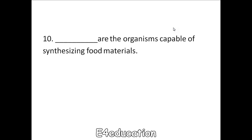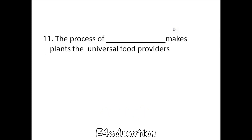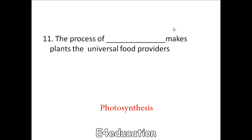Which are the organisms capable of synthesizing food material? Autotrophs. The process of photosynthesis makes plants the universal food providers. Photosynthesis.